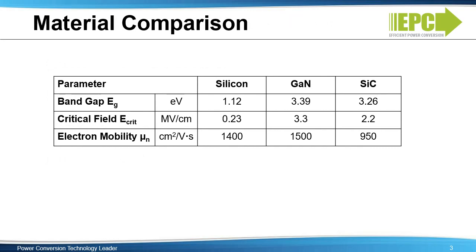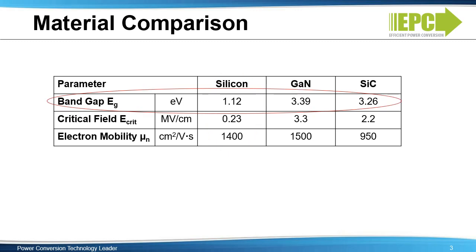In order to understand why GaN makes a superior transistor, the basic properties of the GaN crystal must be examined and compared to silicon and silicon carbide. The band gap is the amount of energy it takes to put an electron away from the silicon atom in the crystal. The higher this energy, the higher the temperature at which the device can operate before the semiconductor properties degrade. It also indicates how much electric field can be tolerated by the crystal before it will break down. The band gap for silicon carbide and GaN are approximately 3 volts versus silicon at about 1.1 volts, and are therefore labeled wide band gap materials.